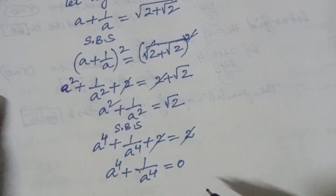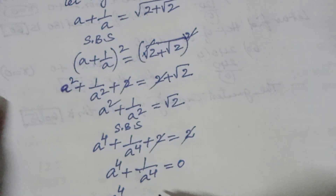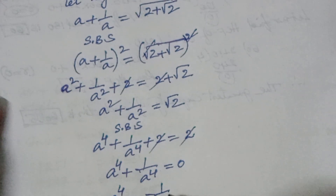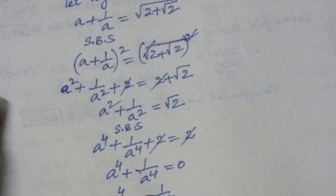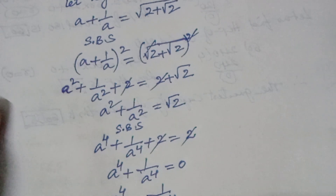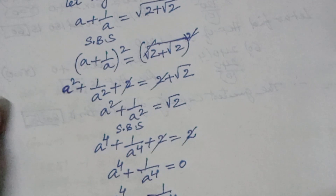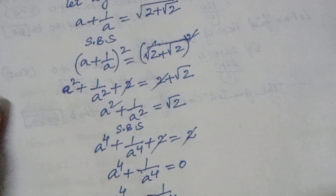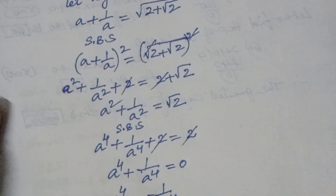Therefore a to the power of 4 equals minus 1 by a to the power of 4, which means a to the power of 8 equals minus 1. Since a equals xy, we have xy to the power of 8 equals minus 1.